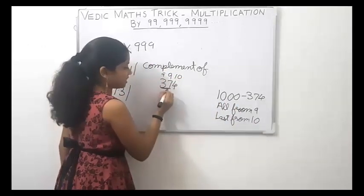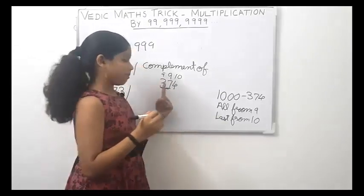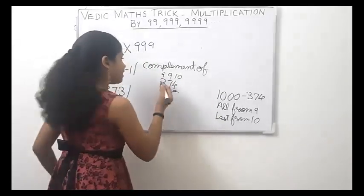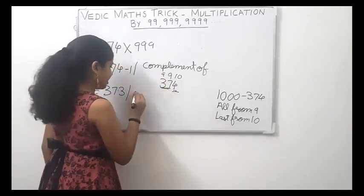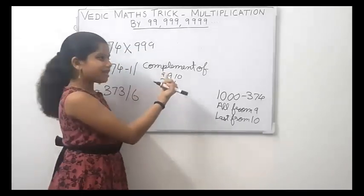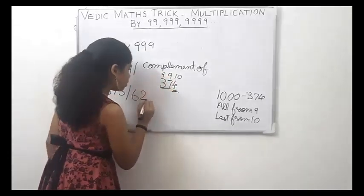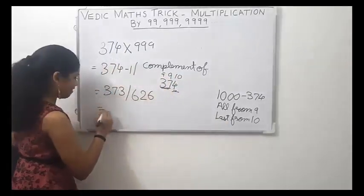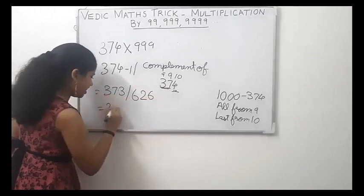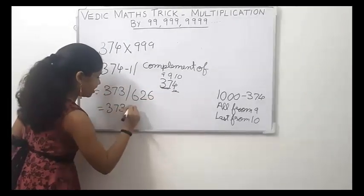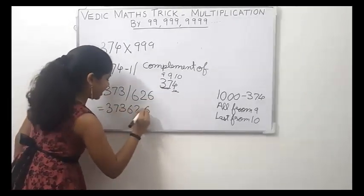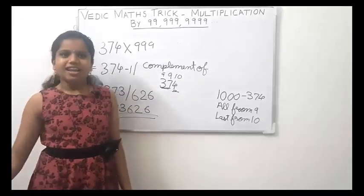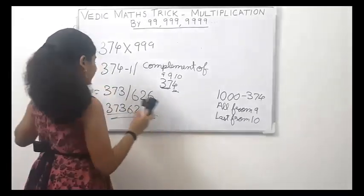All these digits are to be subtracted from 9 and the last digit from 10. So: 9 minus 3 is 6, 9 minus 7 is 2, 10 minus 4 is 6. So our answer is 373626. This is our answer. Now let us take a 2-digit number.